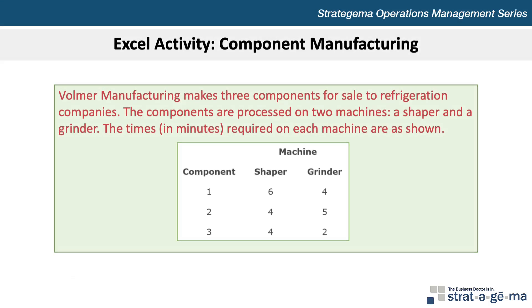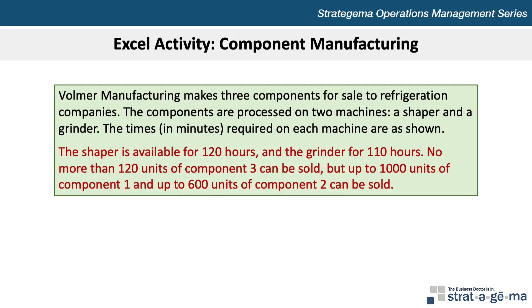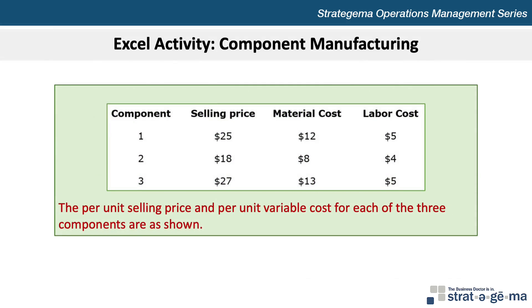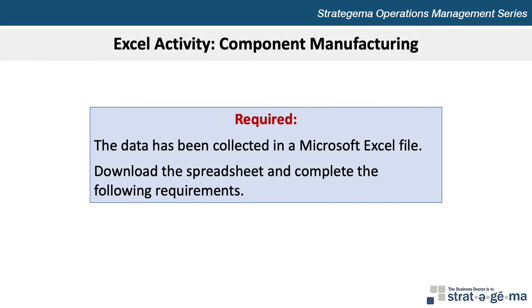Here's the data for our problem. Volmer Manufacturing makes three components for sale to refrigeration companies. The components are processed on two machines, a shaper and a grinder. The times in minutes required on each machine are as shown. The shaper is available for 120 hours and the grinder for 110 hours. No more than 120 units of Component 3 can be sold, but up to 1,000 units of Component 1 and up to 600 units of Component 2 can be sold. The company already has orders for 600 units of Component 1 that must be satisfied. The selling price per unit and per unit variable costs for each of the three components are shown. The data has been collected in a Microsoft Excel file, so download the spreadsheet and complete the following requirements.